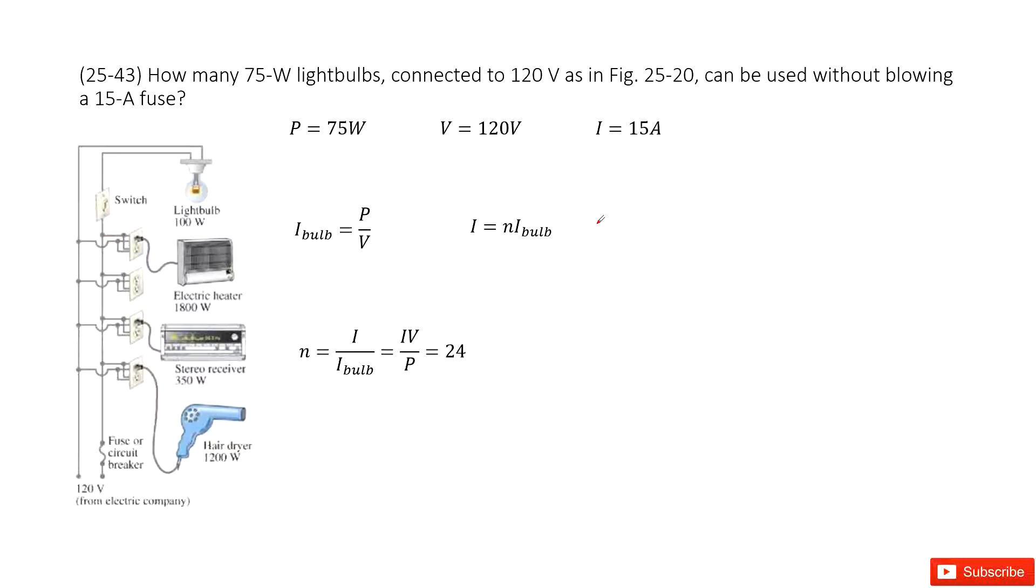There we talk about household electrics. You can see, ask you how many light bulbs. This light bulb power is 75 watts. So we write it there, list the given quantities. And connect it to the 120 voltages, and then can be used without burning the fuse. The current the fuse can suffer is 15 amperes.